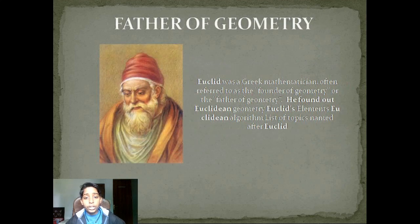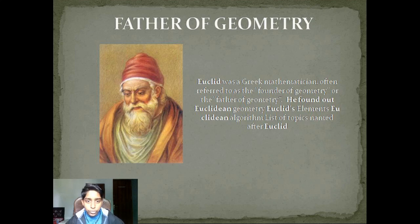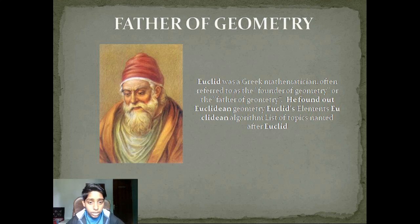The father of geometry is Euclid. Euclid was a Greek mathematician often referred to as the founder or father of geometry. He founded Euclidean geometry, the Euclidean Elements, and the Euclidean algorithm, among many topics named after him.